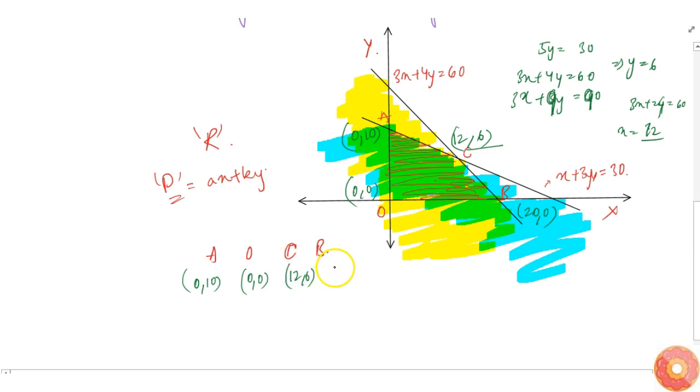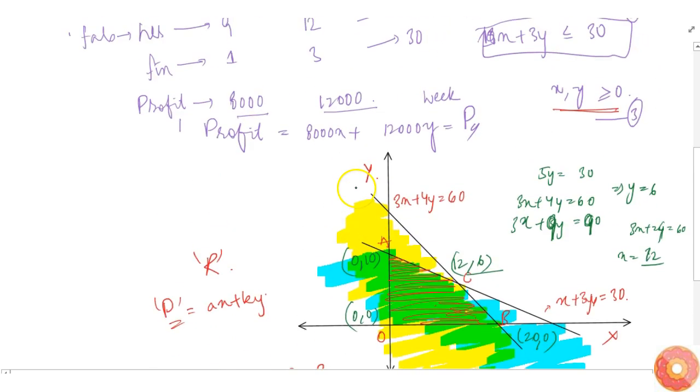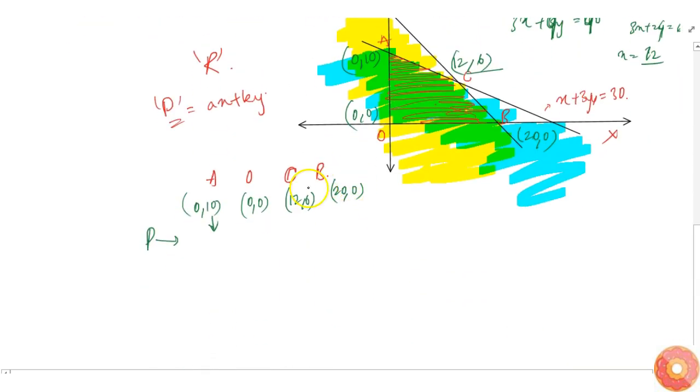At each point let's find P. P is 8,000X plus 12,000Y. At point A, that is 12,000 times 10, which equals 1,20,000.